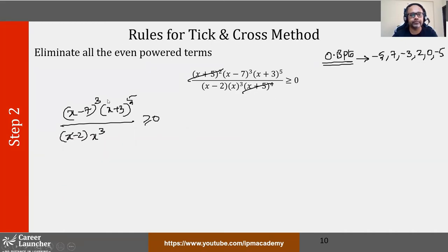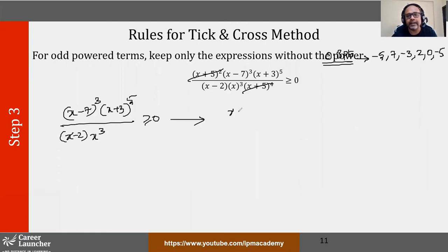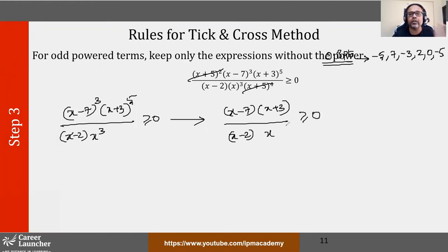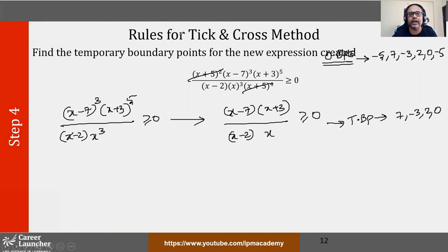Step 3: for all odd power terms, keep only the expressions without the power. When there are odd powers, just delete the powers — don't keep the power, keep the bracket. So this transforms into (x − 7)(x + 3) divided by (x − 2)(x), all greater than or equal to 0. Step 4: find the temporary boundary points for the new expression. The boundary points here are 7, −3, 2, and 0. Till here, there is no calculation — it is just simplification.